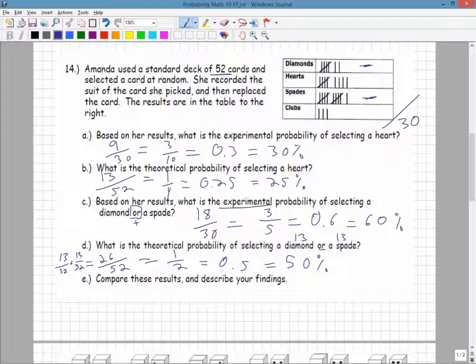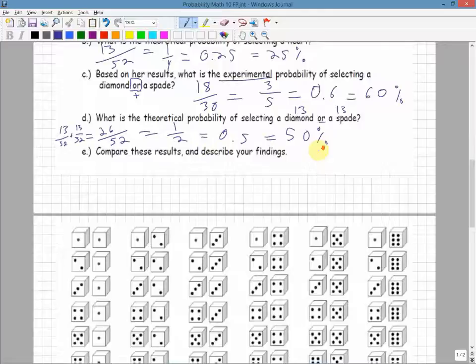Compare the results and describe your findings. You can basically just say, well, look, the experimental probability of doing it was 60%, but the theoretical is 50. So actually, she had a higher probability of getting a diamond or a spade. And same thing up here. Based on her experiment, it was higher than the actual theoretical. That's how you could compare them.